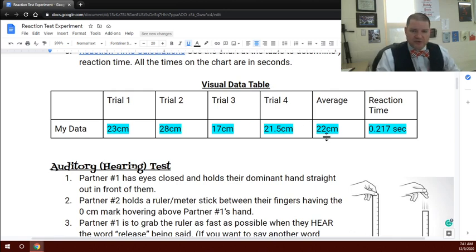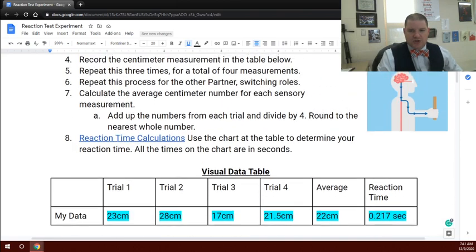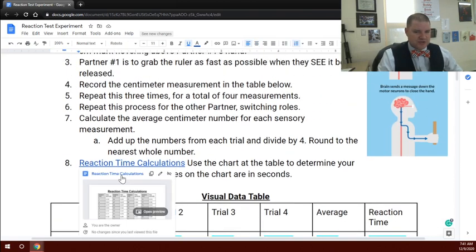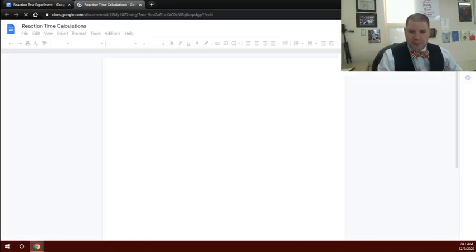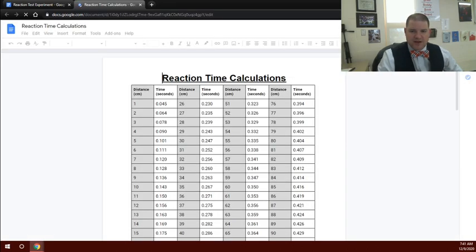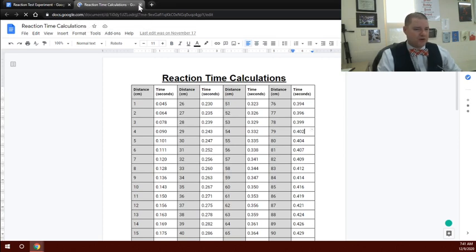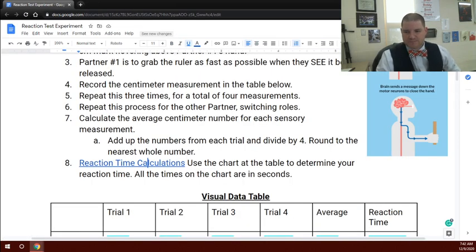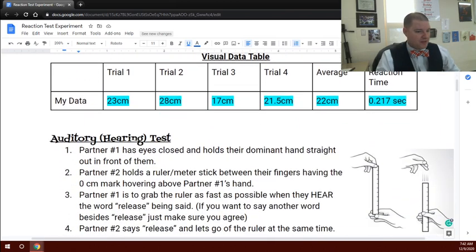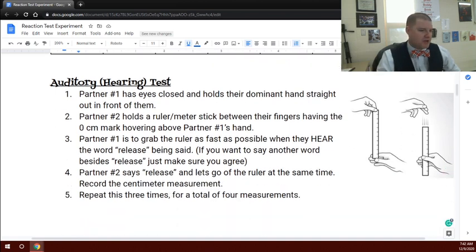For your average, you're going to add up all the numbers. So in this case, 23 plus 28 plus 17 plus 21.5. Add all those up, get whatever number it is, divide that by four. In this case, it would be 22. You're going to use this chart. You'll find what your number is on here. That one was 22, so it would be 0.212 seconds is how fast your sight reacted to the ruler dropping. You can measure your reaction time because the table's already done a lot of the math for you.